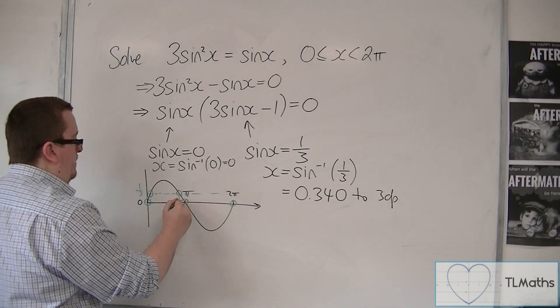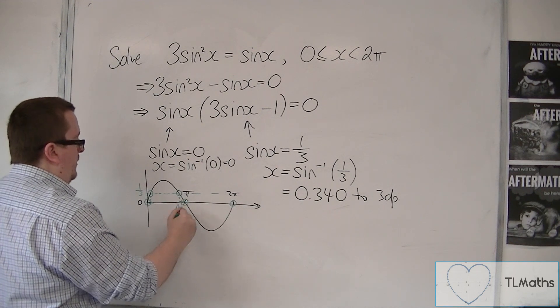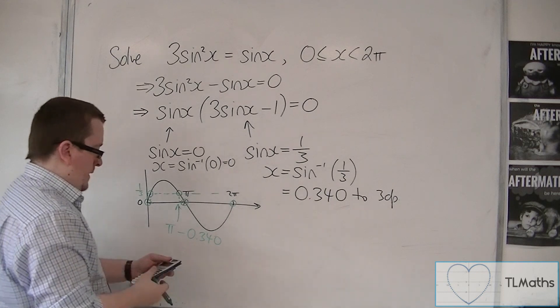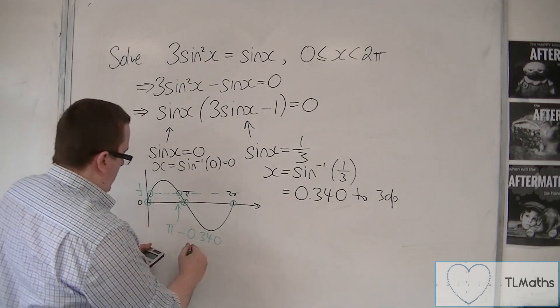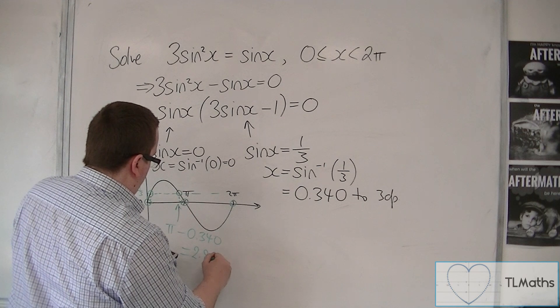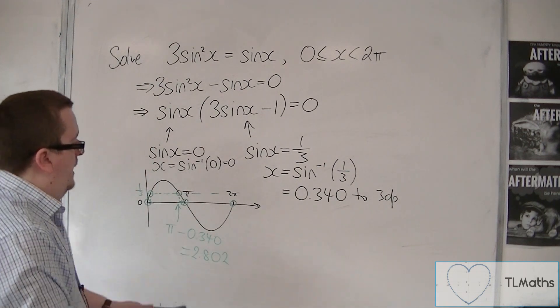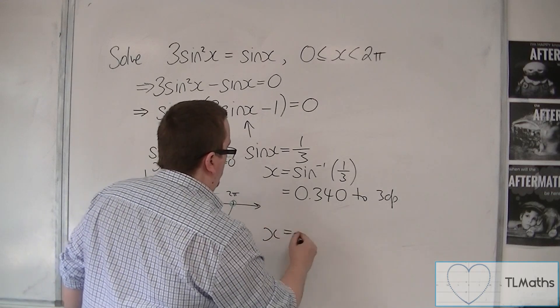And so this solution is pi take away 0.340. So pi take away, the answer is 2.802 to three decimal places. And so the solutions that we have to the original problem is 0.